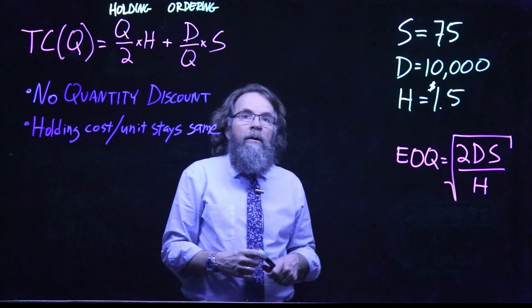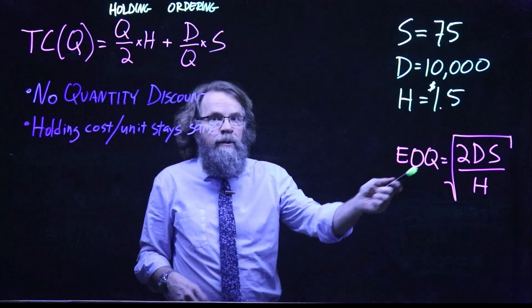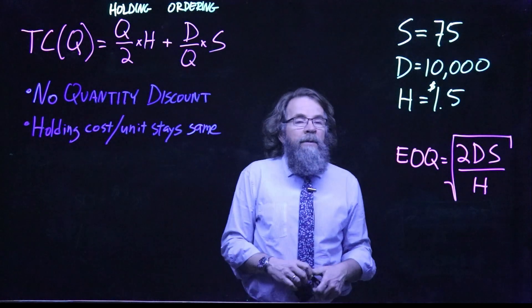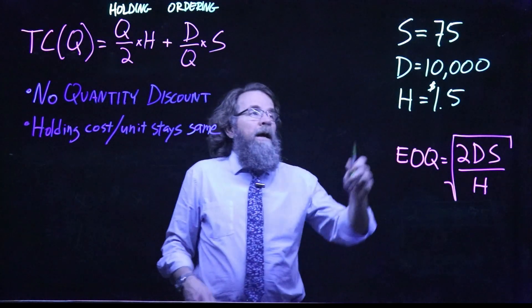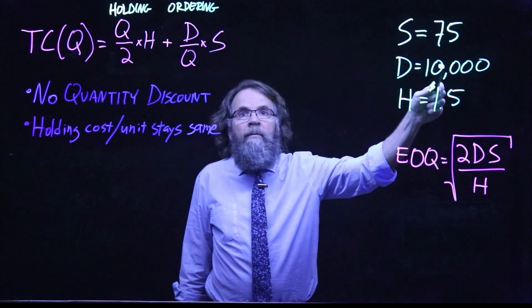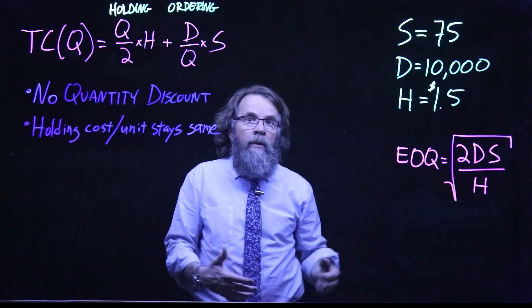I will be assuming that we are using the economic order quantity amount from the famous EOQ square root formula. I have another video that goes into that in more depth, but we will be using the EOQ formula. So we have an ordering or setup cost of $75, annual demand is 10,000 units, holding cost per unit is $1.50.